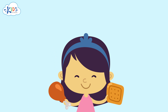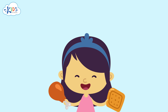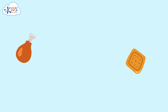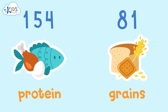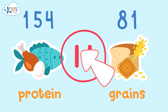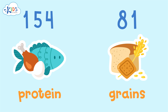I'll leave you with a challenge. I want you to help the kids round the next two types of food one kid eats a day to the nearest hundred and ten. I'll give you some time to think, but if you need more time you can pause the video and answer when you're ready. Okay, here's the answer.